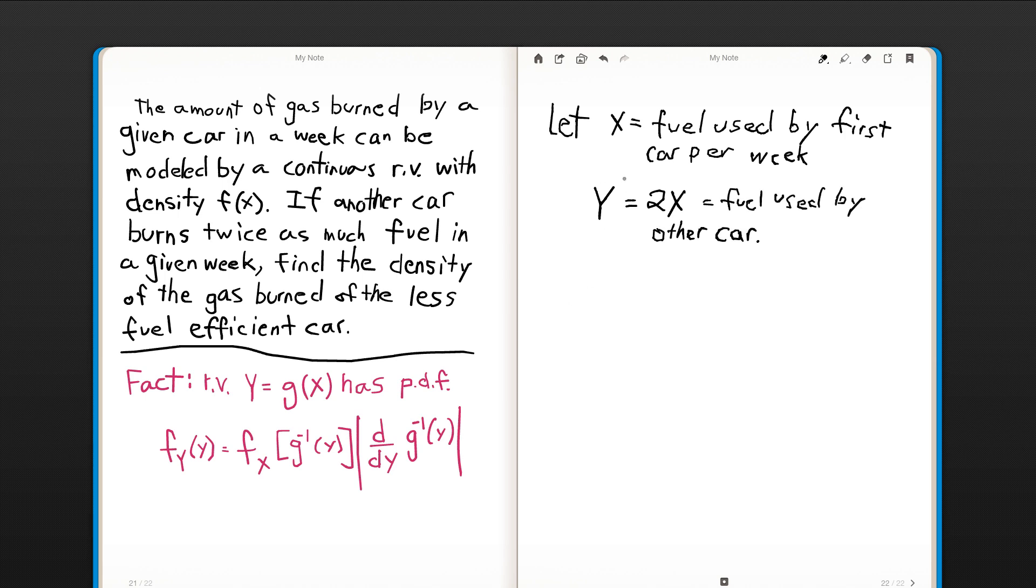This is the fuel used by the less efficient car, we'll just say by other car. Now we want to find the density of y. That's really the meat of this problem—we're given x, we have its density in general given as f(x), and we like to find the density of y. It's a very common problem in probabilities to find the density of a transformed random variable.